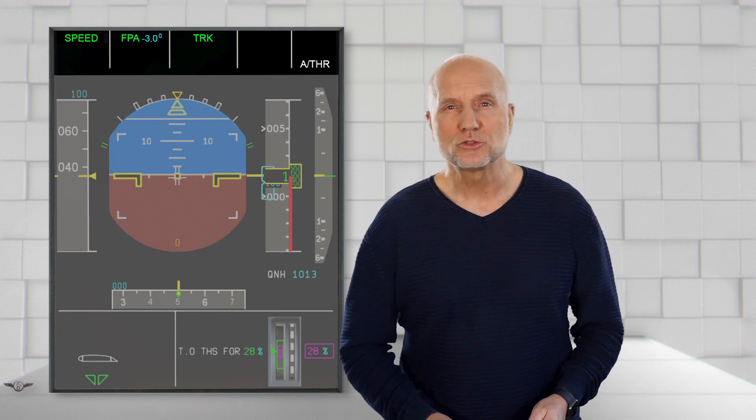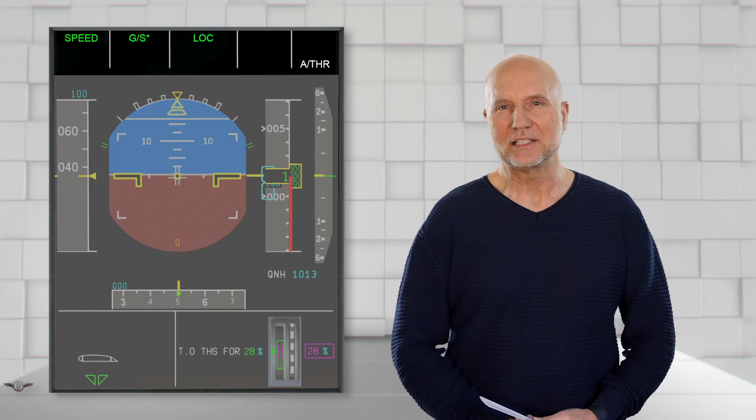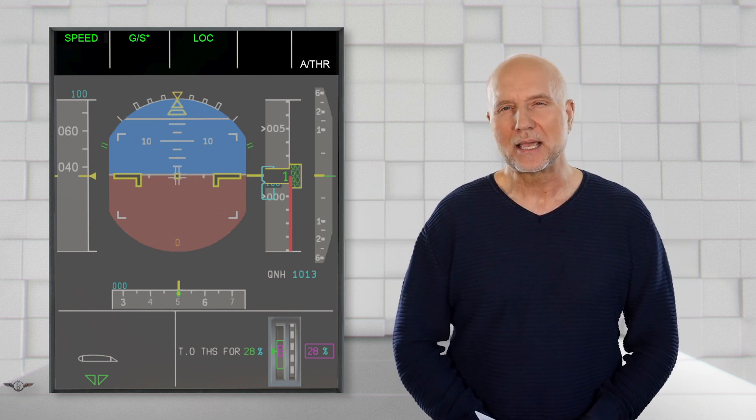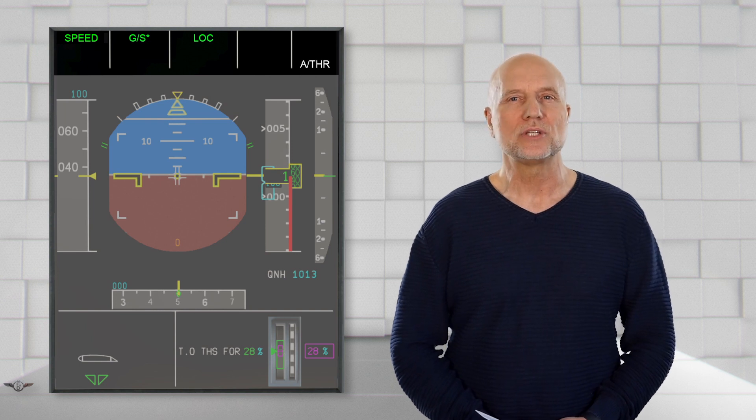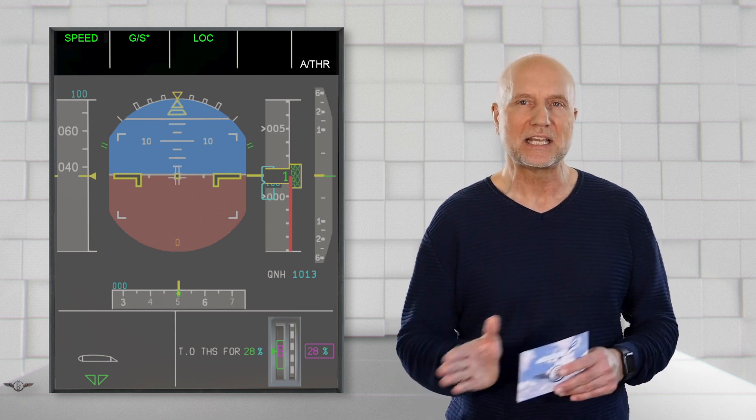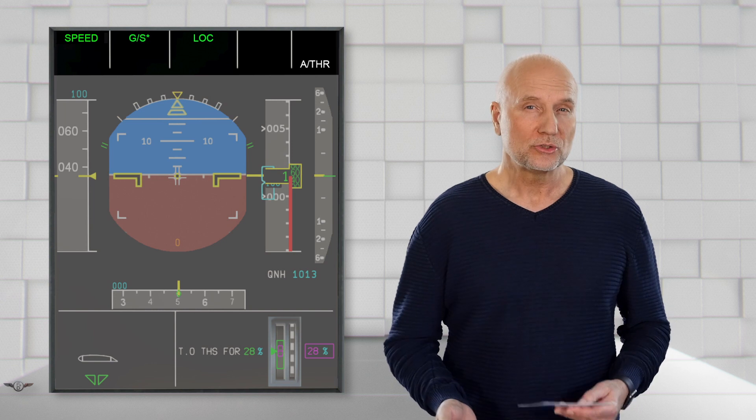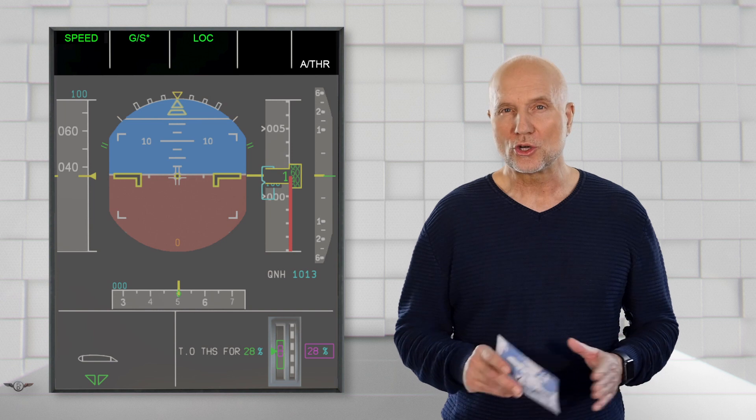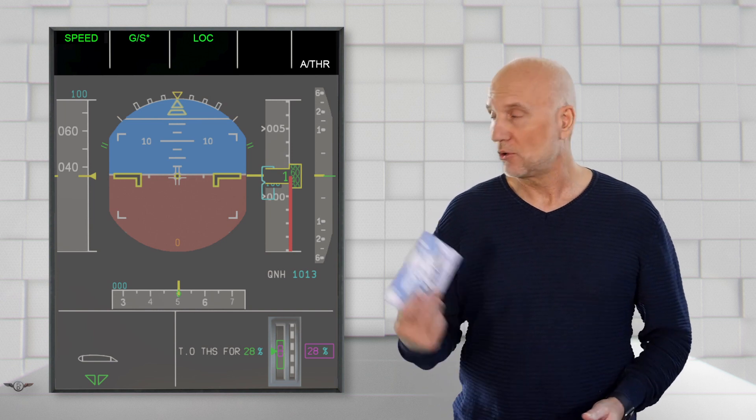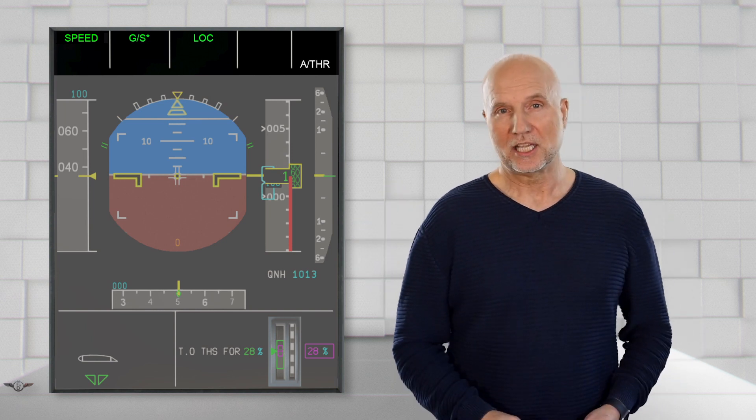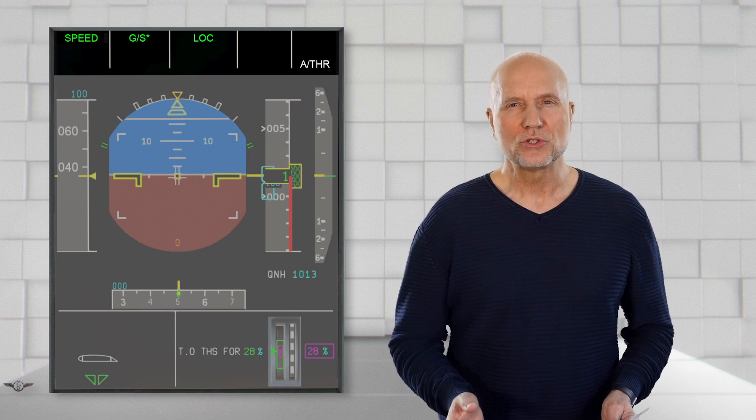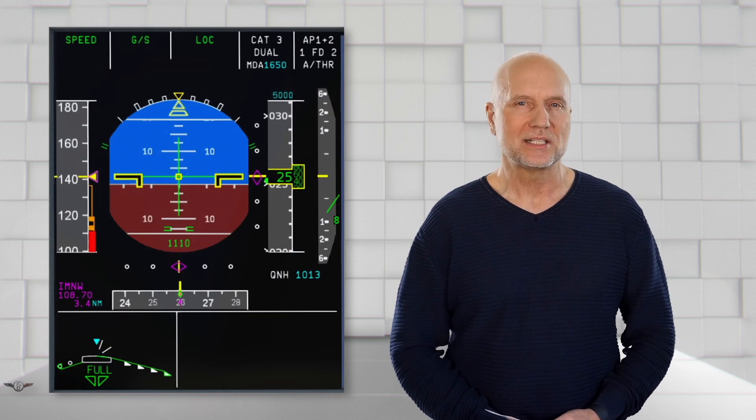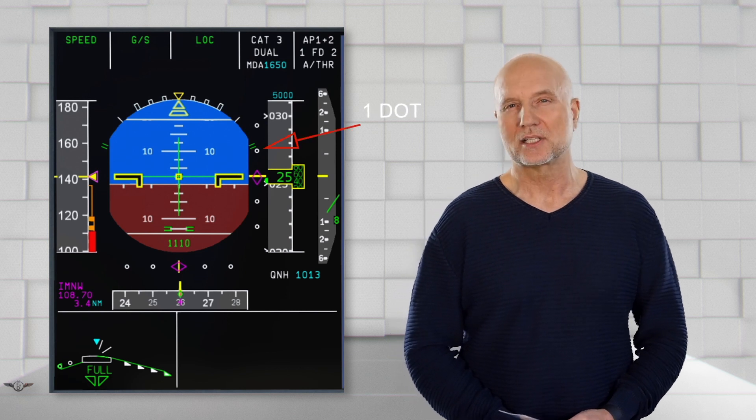Now we come to the vertical guidance modes depending on a valid glide slope beam. Glide slope star is engaged, again a capture mode, in this case to intercept a received glide slope signal. In order to engage GS star, GS was armed before and LOC star or LOC is engaged. In our example, LOC is engaged already. The capture zone of the glide slope is reached when the glide slope deviation is less than two dots on the ILS glide slope scale.